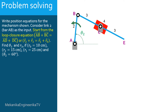It is asked to start from the equation AB plus BC equals AD plus DC. The vector AB is the vector position of the bar AB. The modulus of the vector AB is equal to R2, the length of the bar AB. The angle of the vector AB is theta 2, the input. The vector AB is the vector R2, the vector position of link 2.